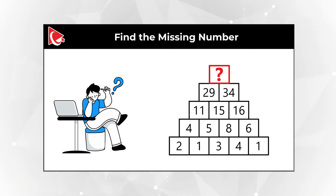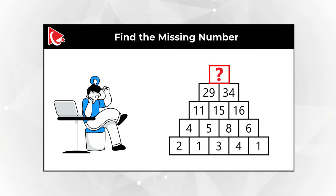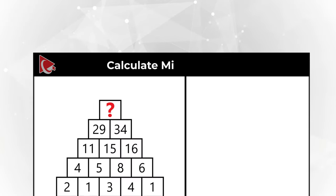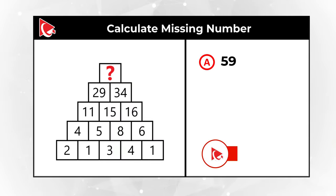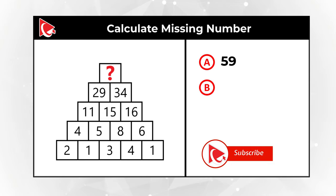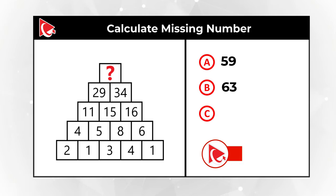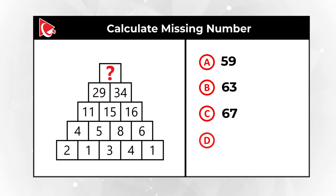You need to calculate the missing number, which is in the top row. You have four different choices: Choice A, 59; Choice B, 63; Choice C, 67; and Choice D, 73.